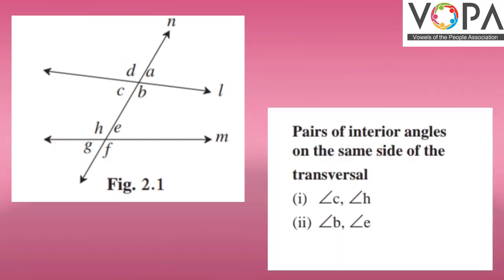The third type of angles are pairs of interior angles which are on the same side of the transversal. So, the first pair will be angle C and angle H which are interior. And the second pair will be angle B and angle E.